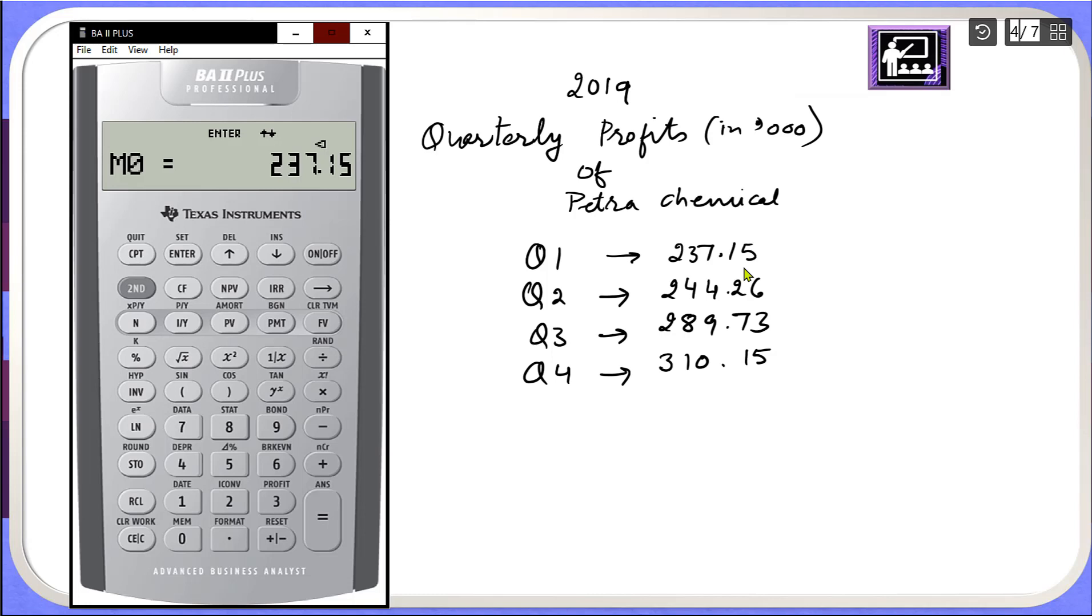So actually the first number gets stored in M0 and second quarter profits 244.26 gets stored in M1.